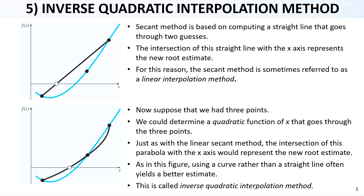Another open method we are going to see is the inverse quadratic interpolation method. This is basically a modification of the secant method. In the secant method, we predict the derivative with a line which goes through two guesses — the first guess and the second guess. The intersection of this line with the x-axis gives us a prediction of the root, which is the zero point of the function. Because we use a straight line between two guesses, this is also called the linear interpolation method.